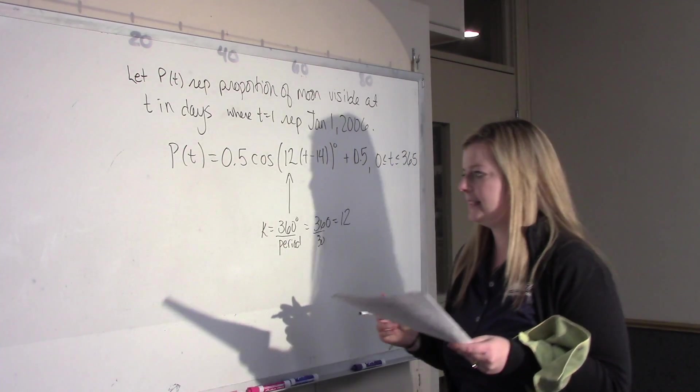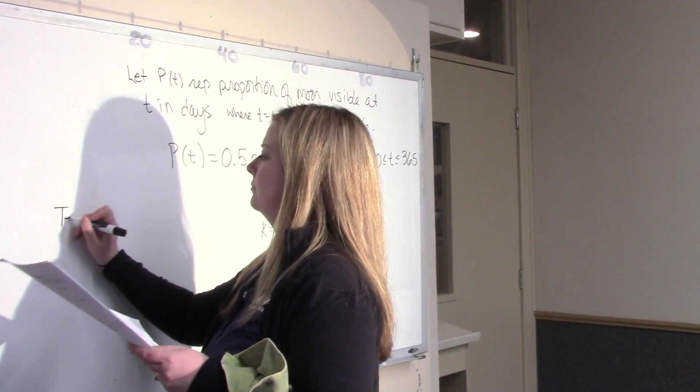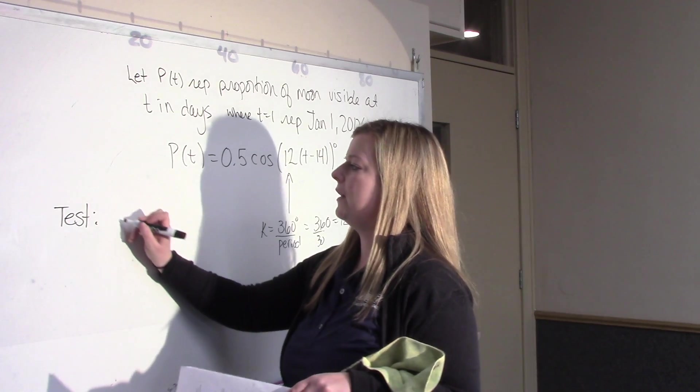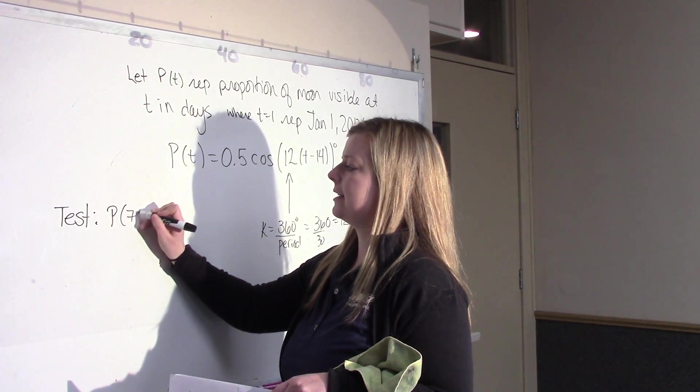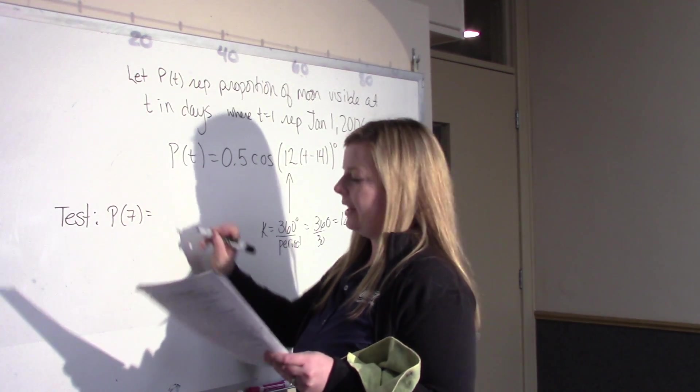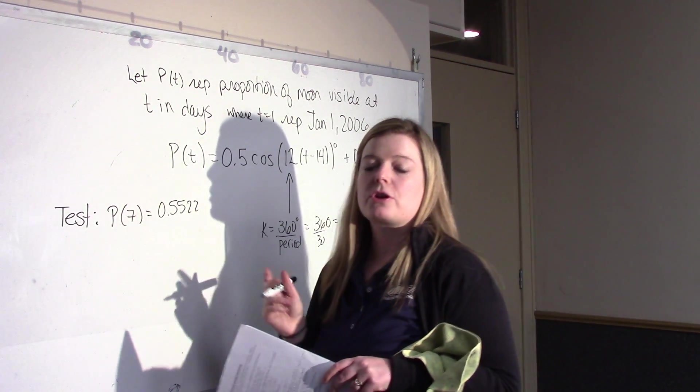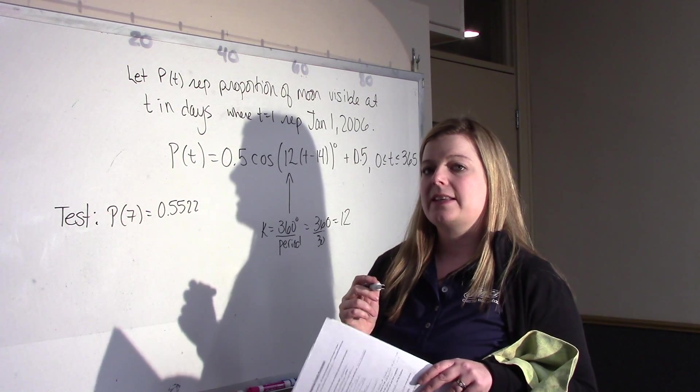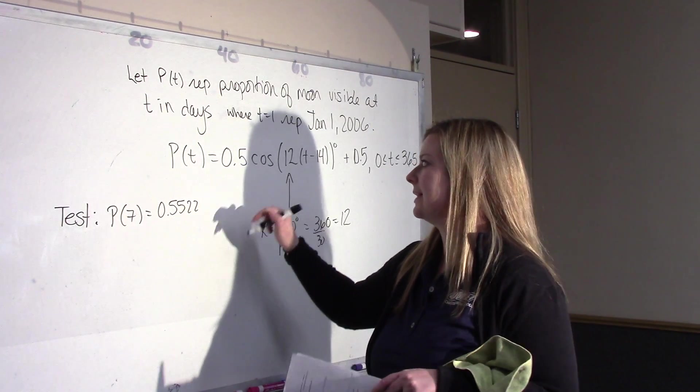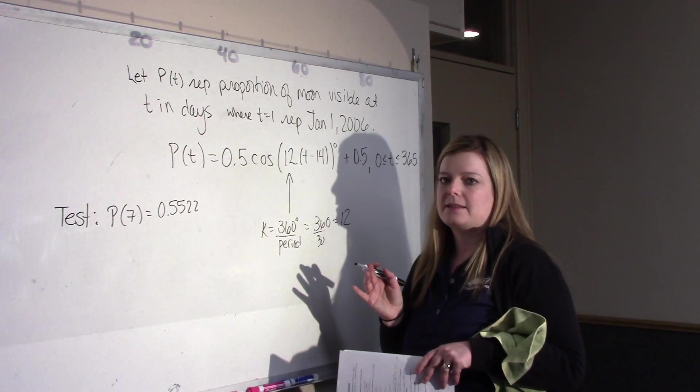So, now you want to do some testing. So, you'll notice if you find P at 7, for instance, you will get 0.5522. So, we know from our chart that P at 7 is actually 0.55. So, this is slightly off because, again, this is our best estimation.